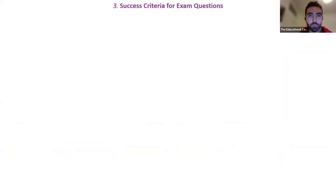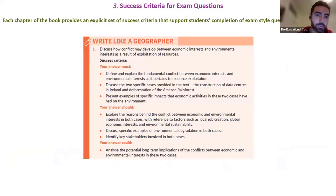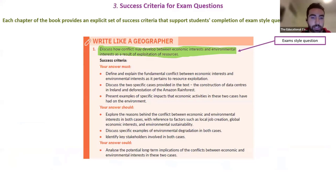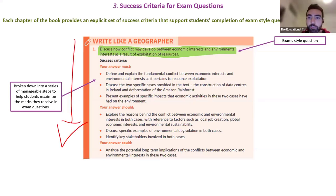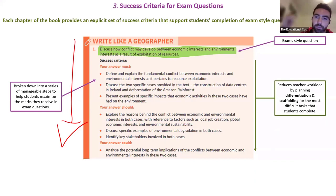The third thing that makes The Natural World different is the large amount of success criteria for exam questions built into the book. There's a Write Like a Geographer section in every single chapter, giving students an exam-style question — usually the most common exam-style question from that chapter. It breaks down that question, typically a 30-marker or for Geoecology an 80-marker, into manageable steps scaffolded and differentiated with must, should, and could sections to help students maximise marks.